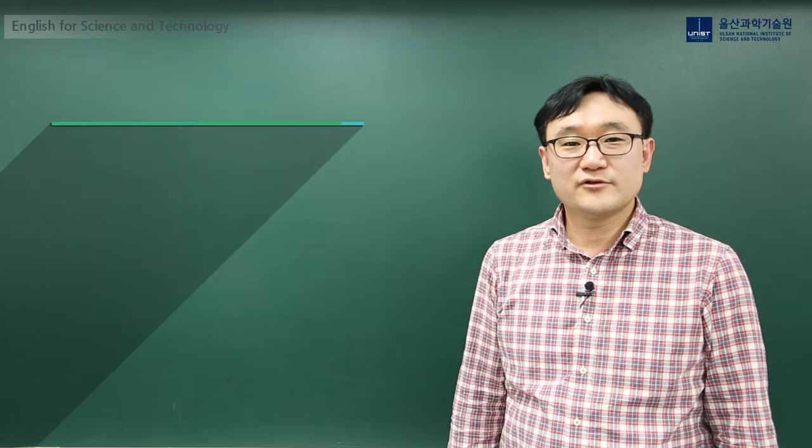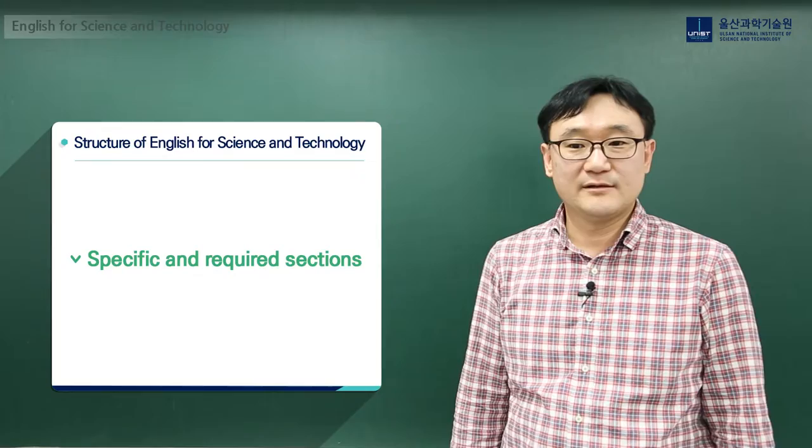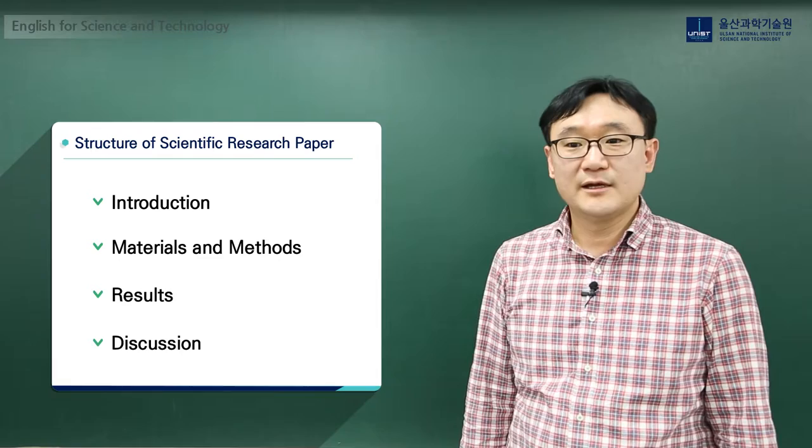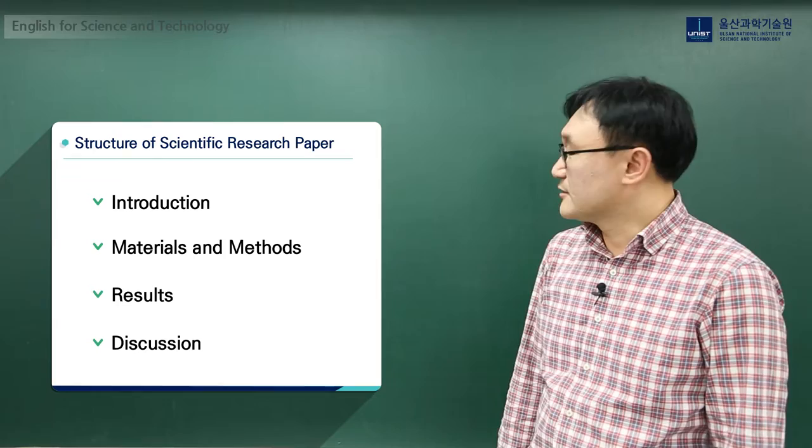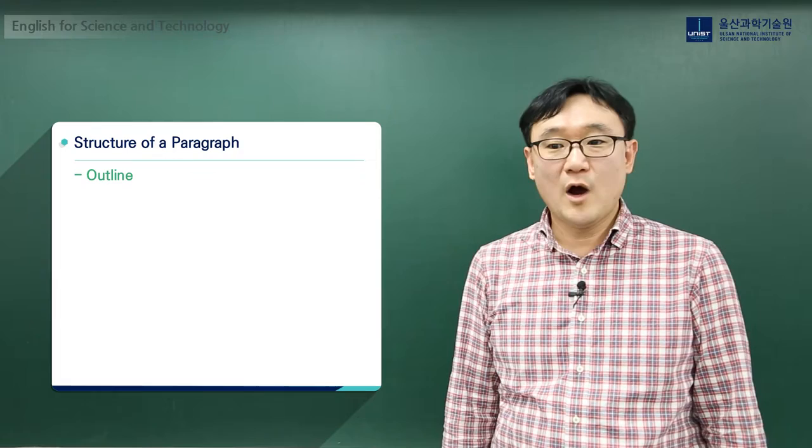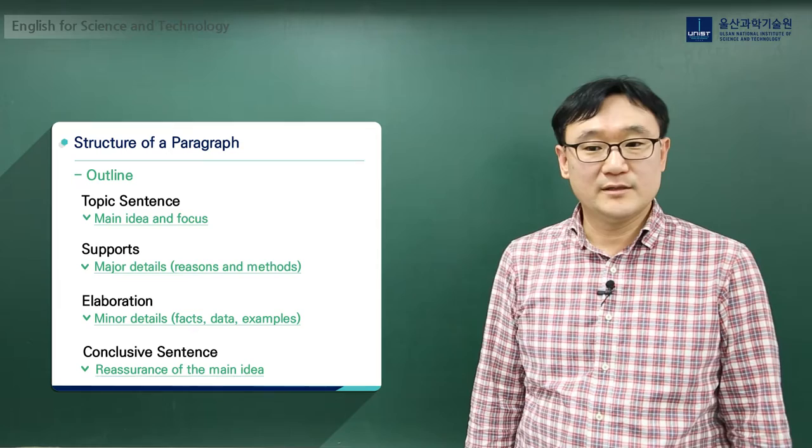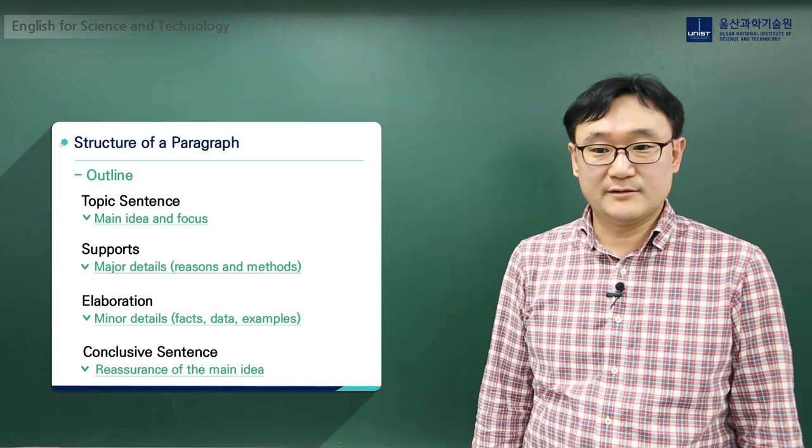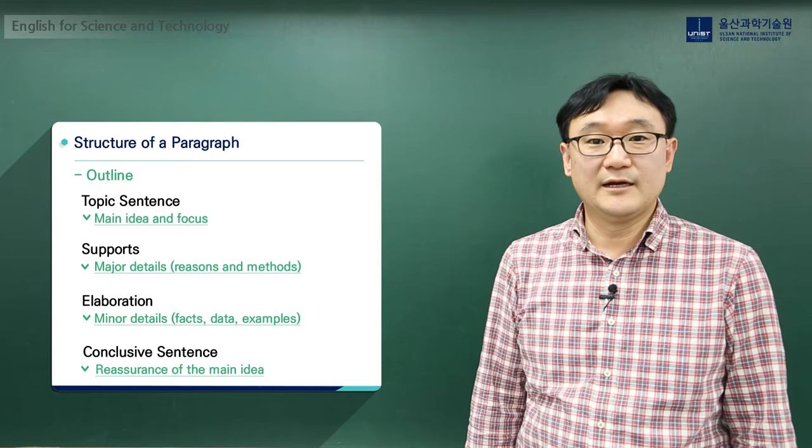The structure of scientific writing needs specific and required sections: introduction, materials and methods, results, and discussion. Each section consists of several paragraphs. The paragraphs require some components, such as main ideas, focus, major and minor details to support the main ideas, and a conclusive sentence to reassure the main ideas.